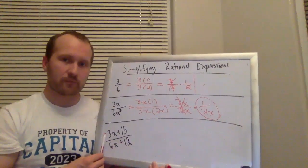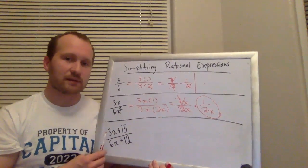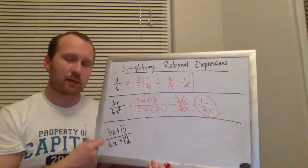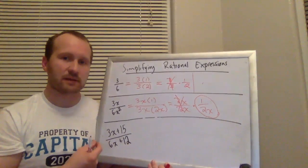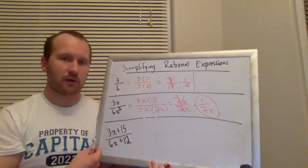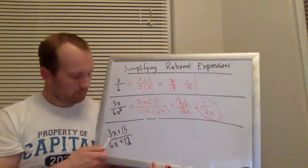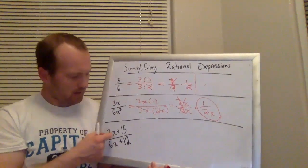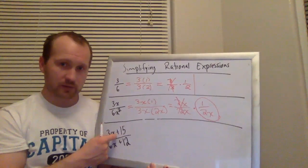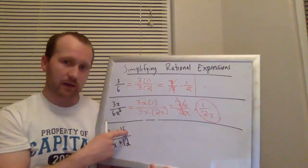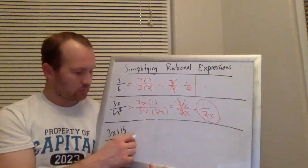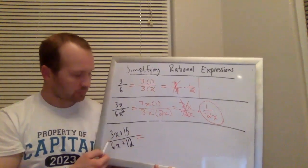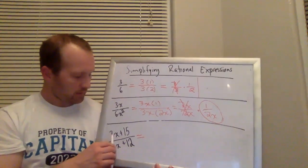How about this one in the bottom? Now to factor this, instead of just pulling numbers apart and looking for common factors like 6 is 2 times 3 or x squared is x times x, here I'm going to have to use the distributive property. Because factoring one of these isn't going to help me. I need to factor this entire expression.